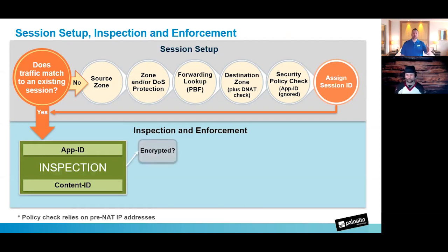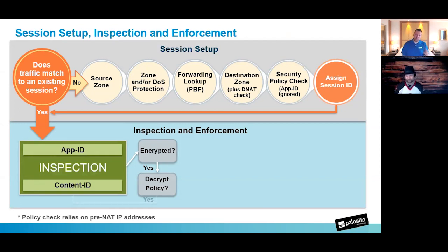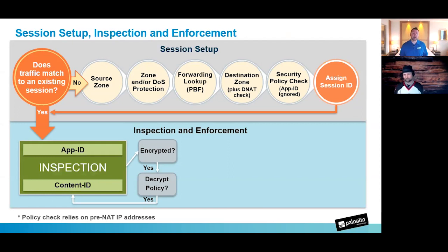After inspection, the firewall checks whether traffic is SSH or SSL encrypted. If it is, it checks for a matching decryption policy rule. If a rule matches, decryption is performed in the inspection and enforcement stage, and the traffic is sent through inspection again — because the difference between HTTP and HTTPS is the S, which stands for SSL or Secure. Once the encryption is removed, the firewall re-inspects the decrypted traffic to see what was inside. You'll see traffic first appear as SSL, then as web-browsing after decryption.